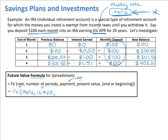Next is the payment — that's our regular deposit — which is $100. Then the present value represents our starting amount, and since we started with zero we put 0. We can close the parentheses there. The spreadsheet may prompt you with 'end' or 'beginning' as an optional entry — we don't need to enter it because we're always assuming deposits are made at the end of the month, and that is the default assumption spreadsheets make when you leave that field blank.